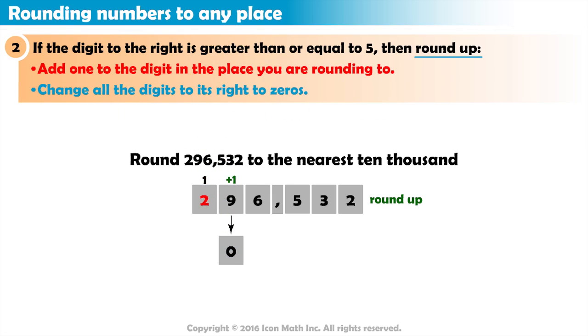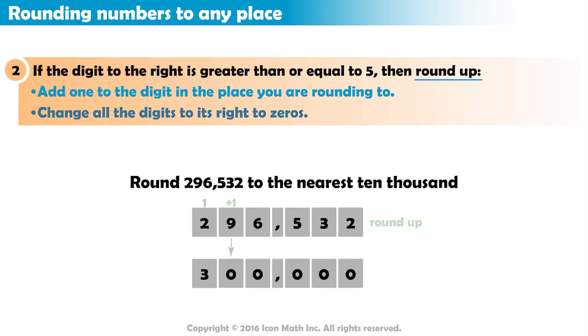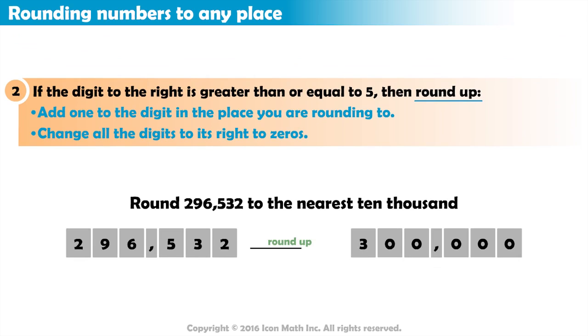2 in the 100,000s place becomes 3. All digits to its right become zeros. And the number after rounding is 300,000. Good job!